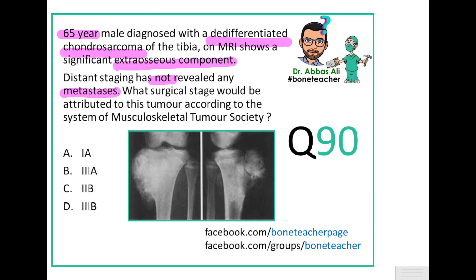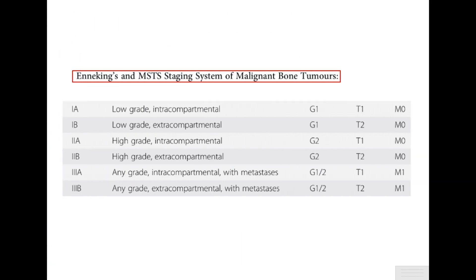To determine the surgical stage, you need to know the MSTS staging system. A low-grade tumor is considered Stage 1, and if it is intracompartmental — limited to one barrier — it is 1A. If it grows beyond that compartment and breaks the barriers, it is extracompartmental and that is 1B. High-grade intracompartmental is 2A, and high-grade extracompartmental is 2B.